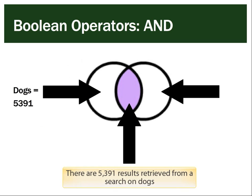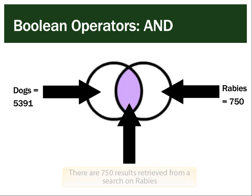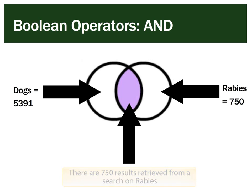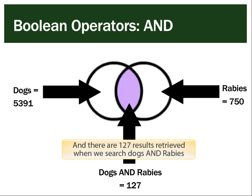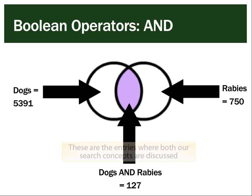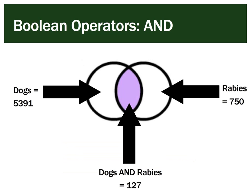There are 5,391 results retrieved from a search on dogs. There are 750 results retrieved from a search on rabies. And there are 127 results retrieved when we search dogs AND rabies — these are the entries where both of our search concepts are discussed.